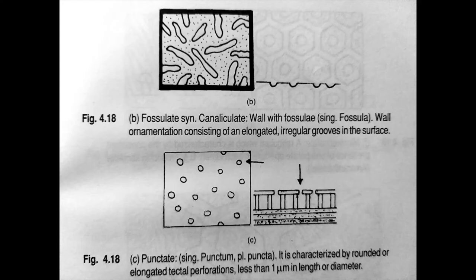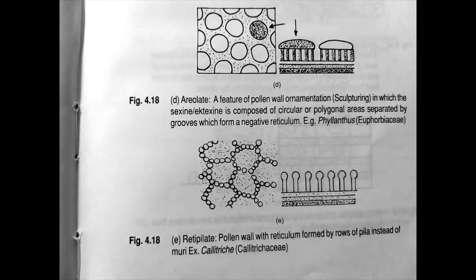Next we have foveulate, singular is fovea. Here the wall ornamentation consists of elongated irregular grooves in the surface. Next we have punctate, singular is punctum and plural is puncta. It is characterized by rounded or elongated tectile perforations less than one micrometer in length or diameter.